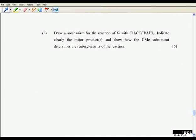Moving on to part two, here you are asked to draw a mechanism for the reaction of g with acetyl chloride and aluminum chloride, indicate the major products, and show how the methoxy substituent determines the regioselectivity of the reaction. What do we need to draw here?